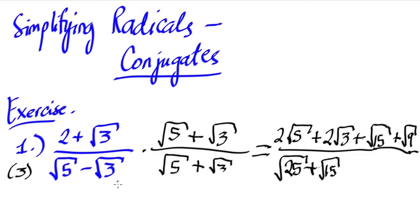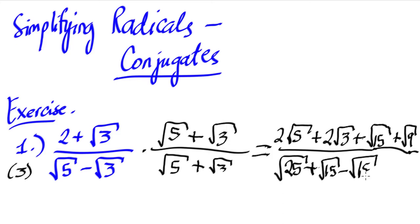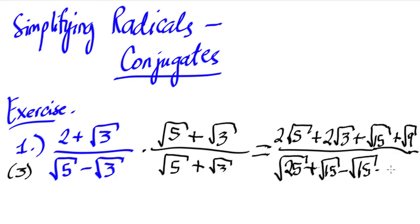For the inner term, negative square root of three times square root of five gives us negative square root of 15. And for the last term, negative square root of three times positive square root of three gives us negative square root of nine, which is just three.